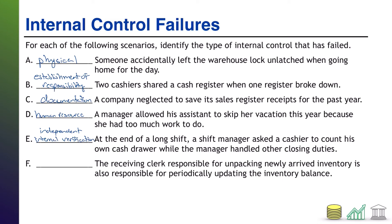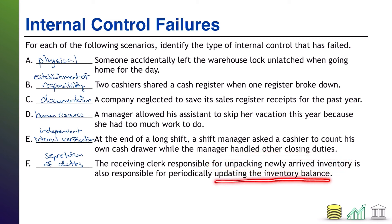And that brings us to F. The receiving clerk responsible for unpacking newly arrived inventory is also responsible for periodically updating the inventory balance. This is the one that usually gets confused with what we did in B, establishment of responsibility. This is a segregation of duties failure. The activities of unpacking the inventory — physically handling it — as well as updating the balance, or record keeping, the combination of those two duties creates an opportunity for fraud. This receiving clerk could simply put some of that new inventory in their car and never put that inventory into the system and no one would be the wiser. So the receiving clerk should do the unpacking, and someone else should do the record keeping, so that the opportunity to steal some of the inventory does not exist.